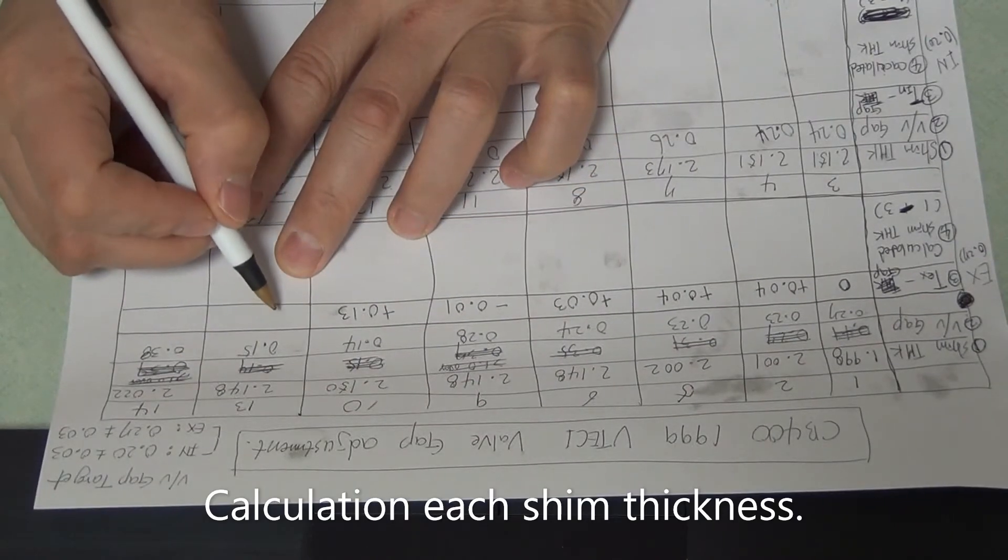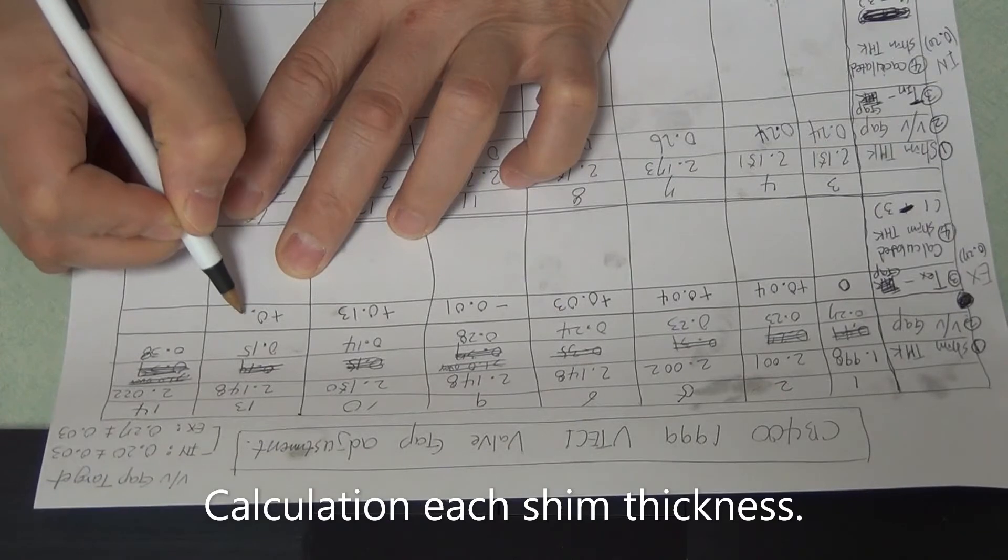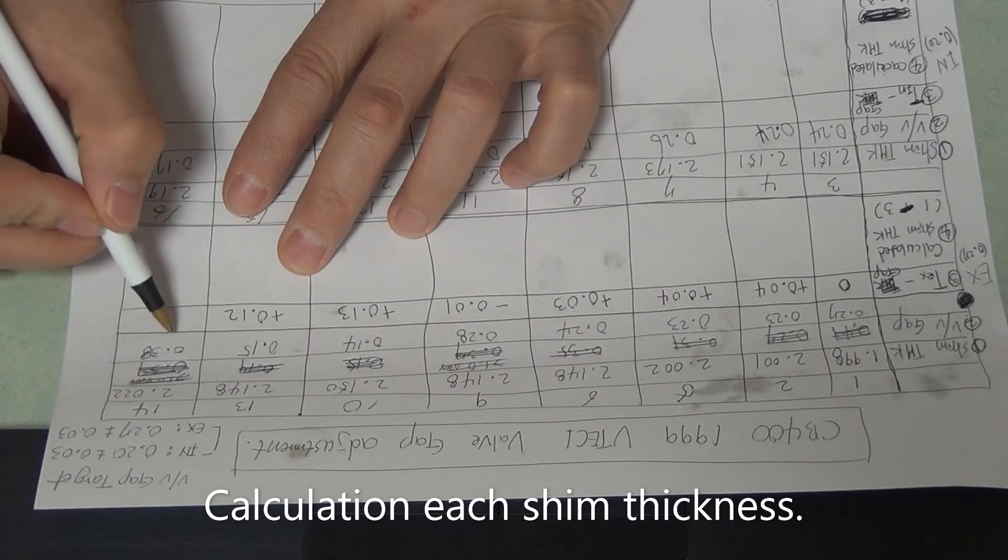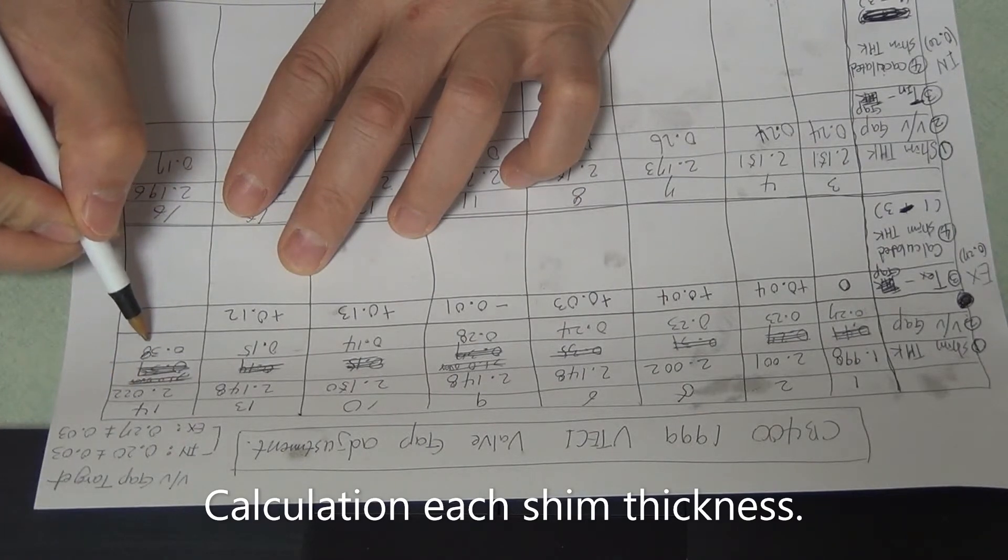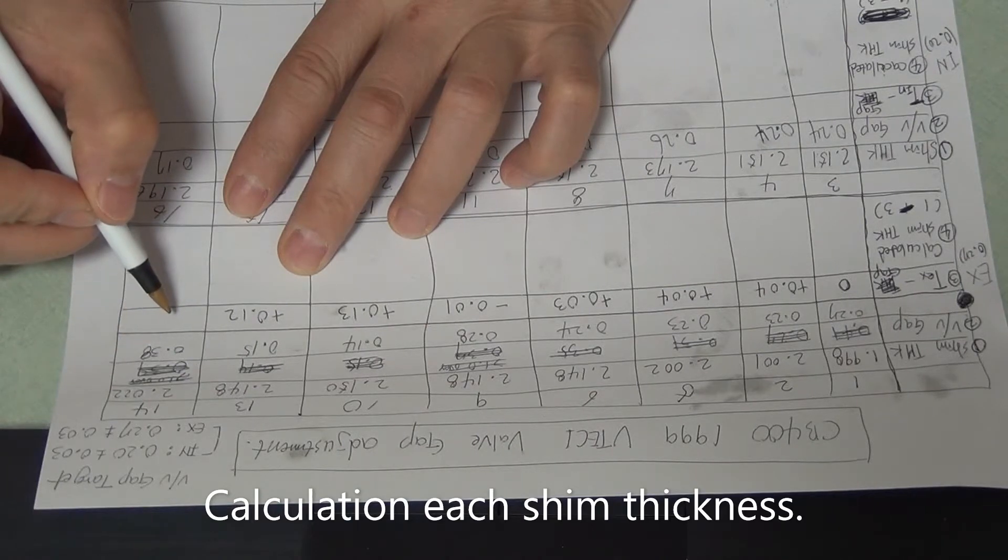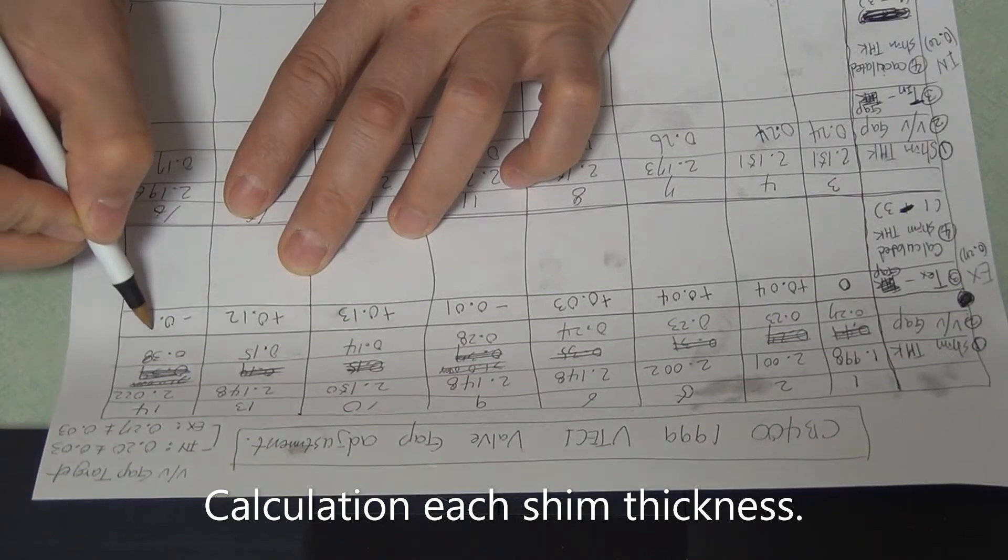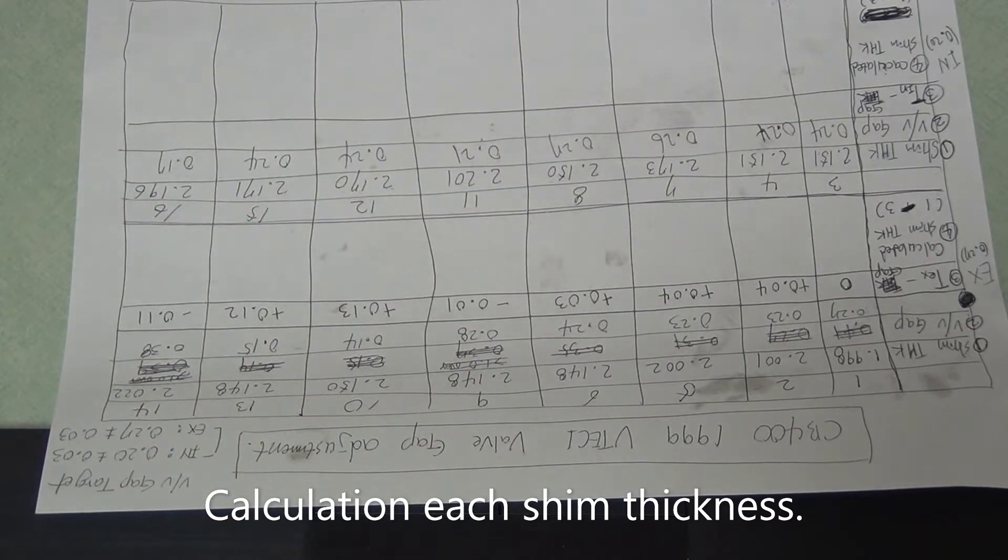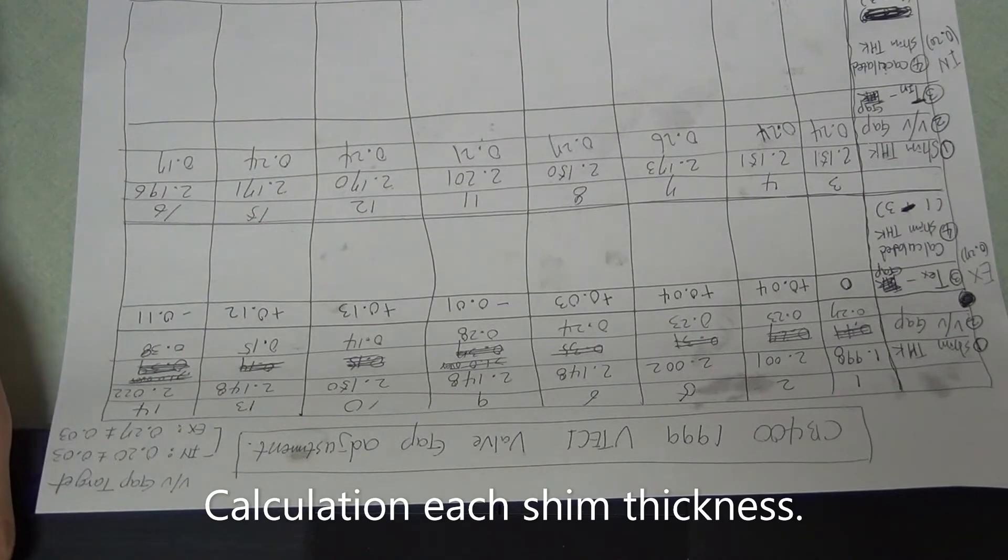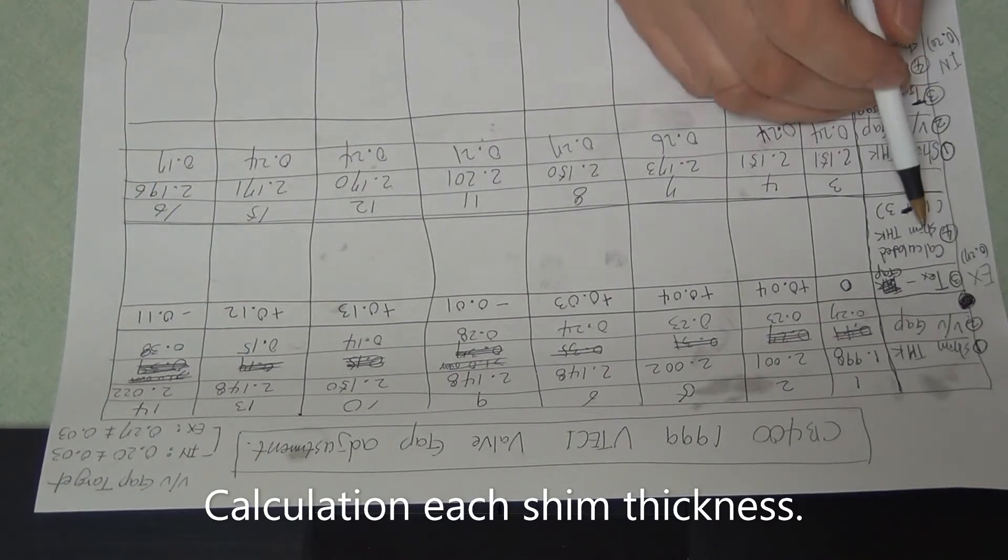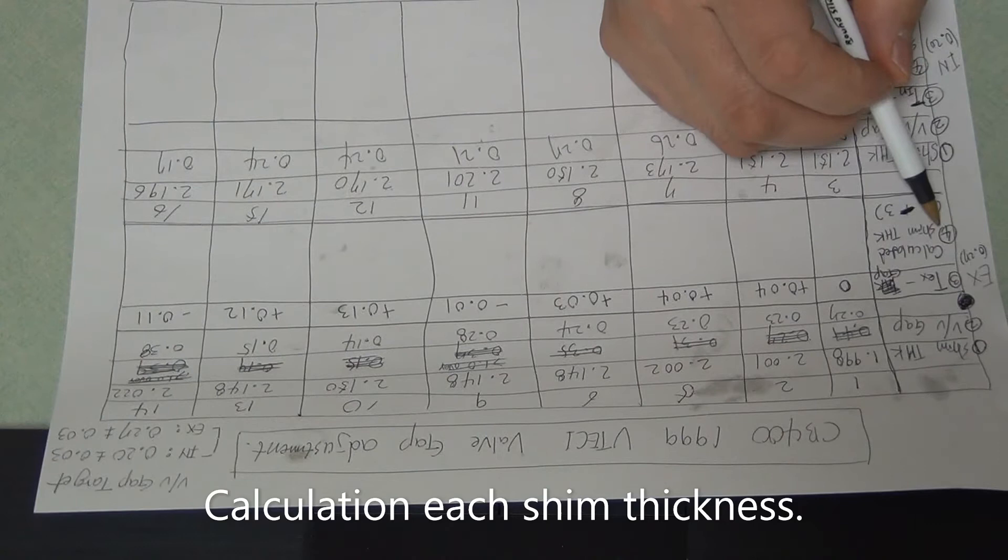0.15 so plus 0.12. And 14 is 0.15 so plus 0.12. And 14 is 0.13, minus. So next field is...